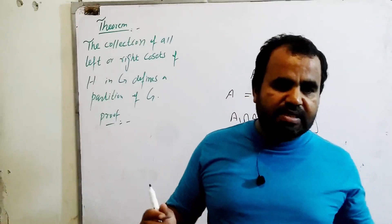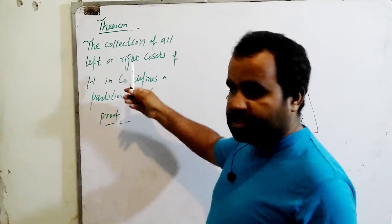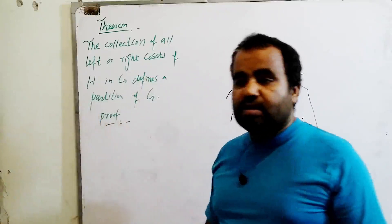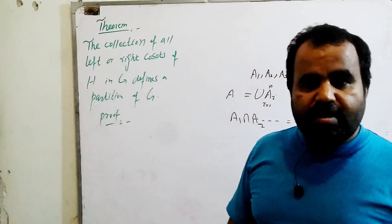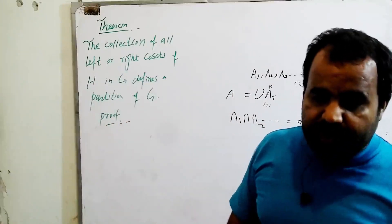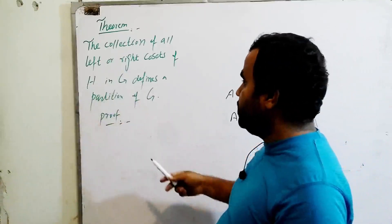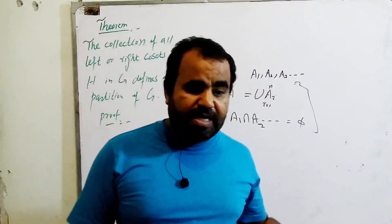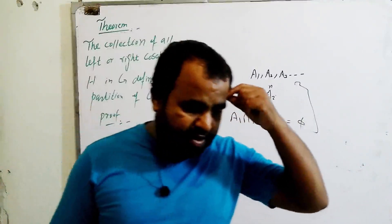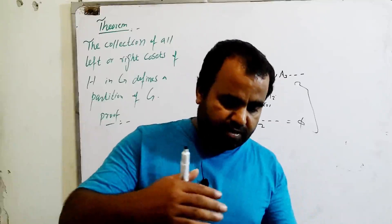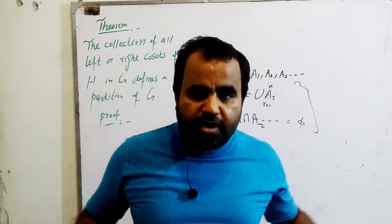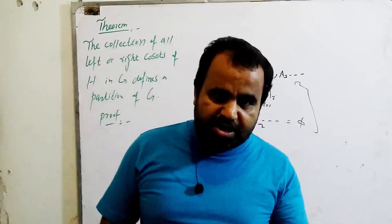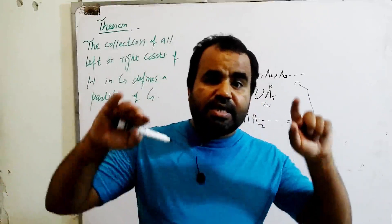The statement means that the collection of all left or right cosets defines a partition of G. We want to prove that all the left or right cosets of H in G define a partition of G, if and only if these two conditions are satisfied: the union of those cosets must equal G, and the intersection should be empty.